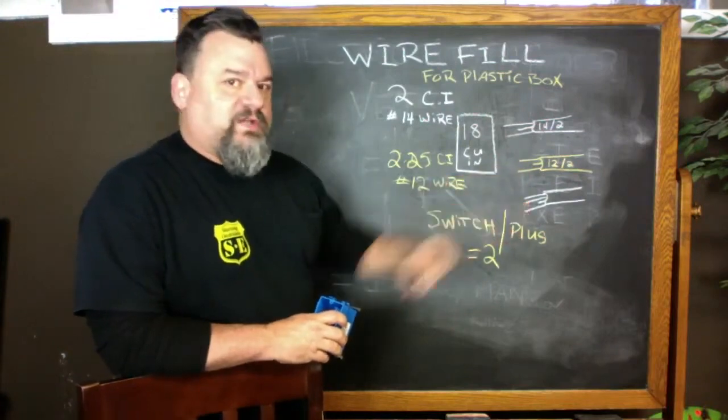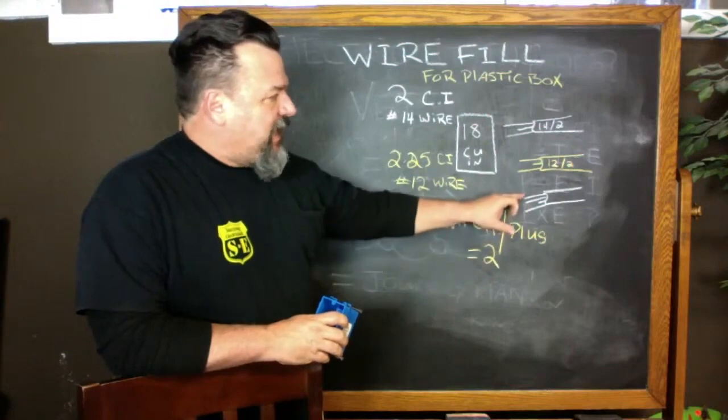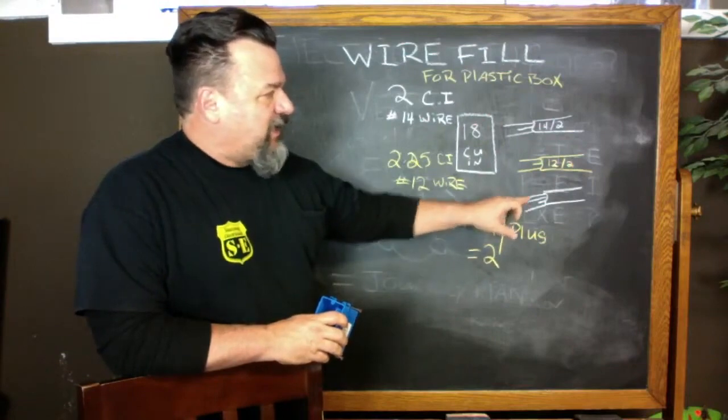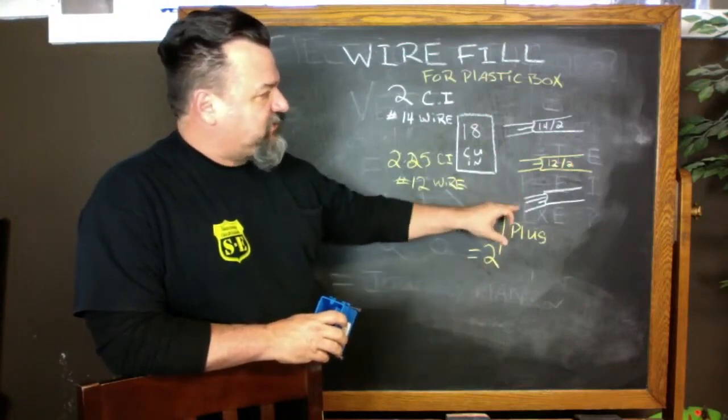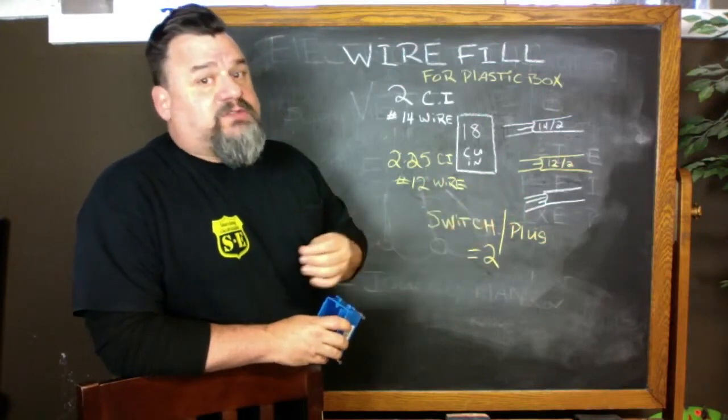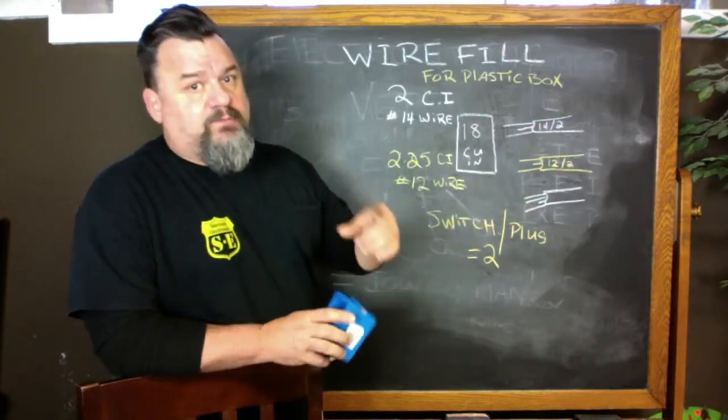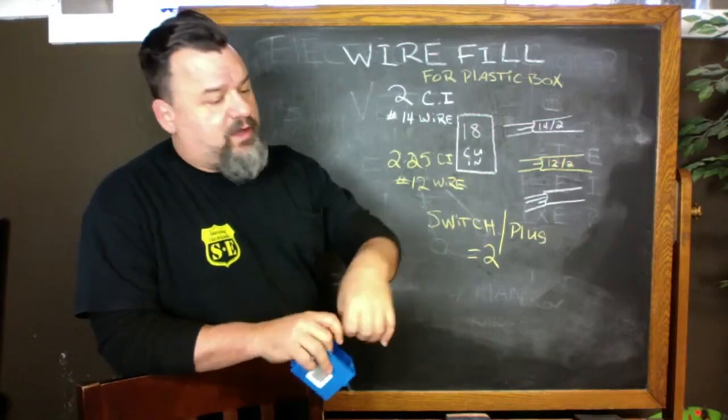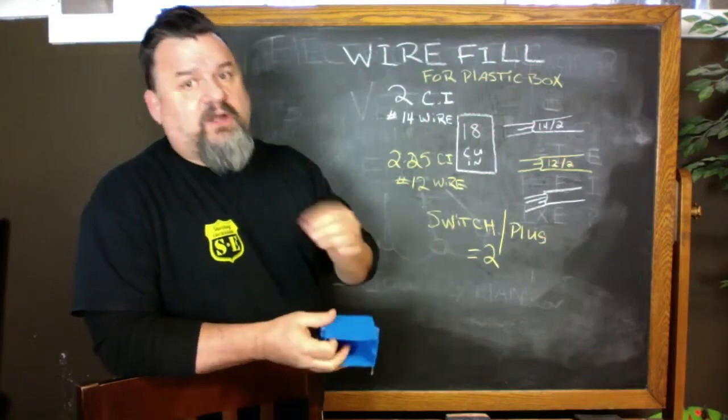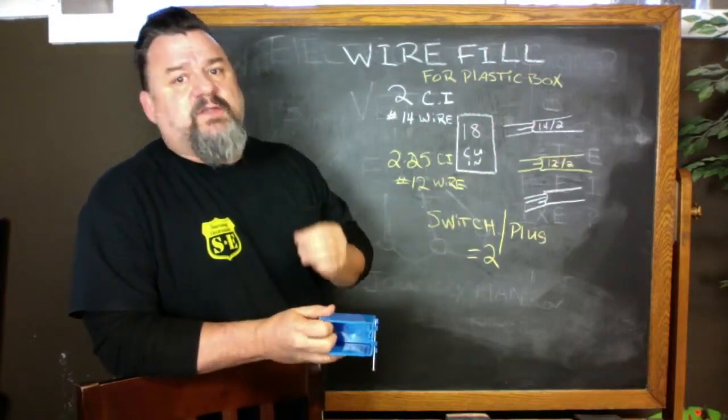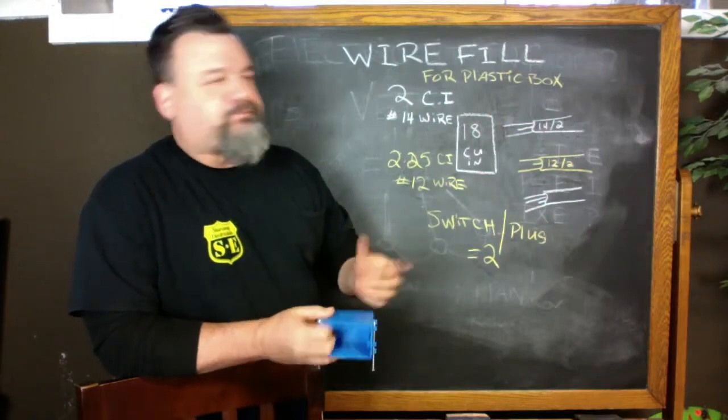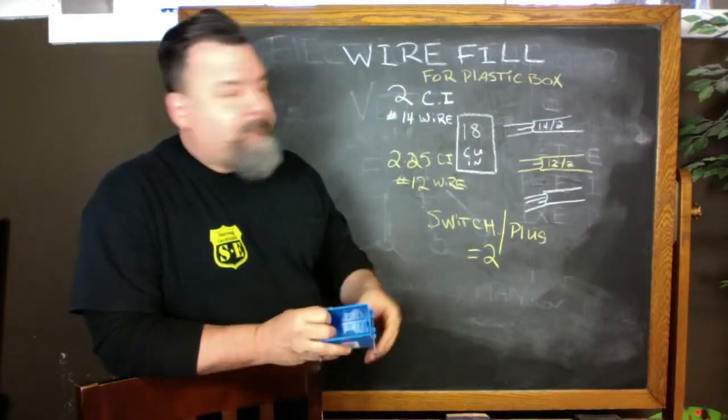We're going to call this one a 14-3. It's got a black, a red, a white, and a ground - two, four, six. With the grounds, they all count as one regardless of how many there are in there. They all tie together, they're not current carrying conductors, so that's why they're only counted as one.